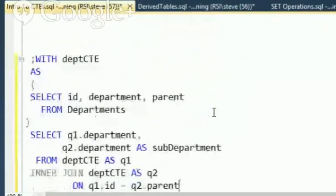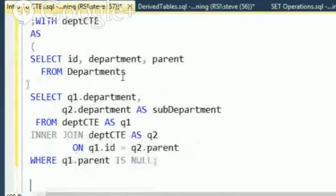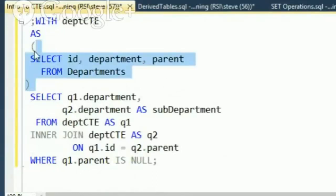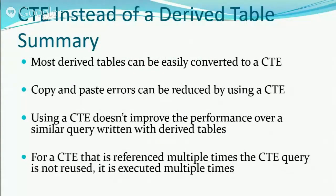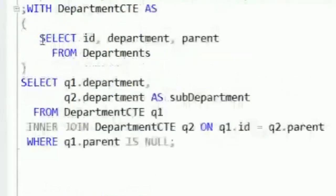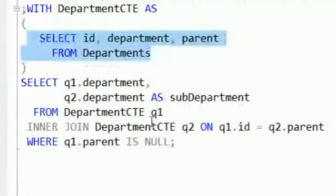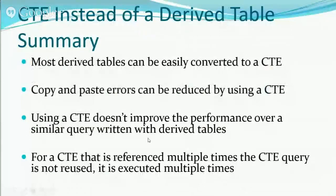We've eliminated the duplicate code. So if we needed to return results in a different order or from a different table, there's only one place to fix that code rather than two. Most derived tables can be easily converted into a CTE — some that are really big and nasty may take a little more work, but it's mostly a copy-and-paste operation. Copy-and-paste errors can be reduced with CTEs, but using a CTE does not improve performance. Even though we've only declared the SELECT statement once, each time it's referenced it gets executed again. There's no performance increase — it's just cleaner code and easier maintenance.